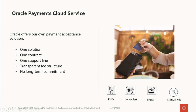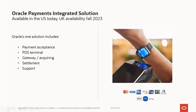We offer a flat fee rate which is transparent, helping with reconciliation, financial auditing, and forecasting of fees — all with no long-term contract commitment. You can work with us as little as month to month. Our solution today is available in the US, with availability for the UK coming this fall in 2023. Our solution offers the payment terminal, we act as the payment gateway and acquiring bank, provide settlement with a merchant's bank, and provide support — used for everything from burger joints to high-end businesses.